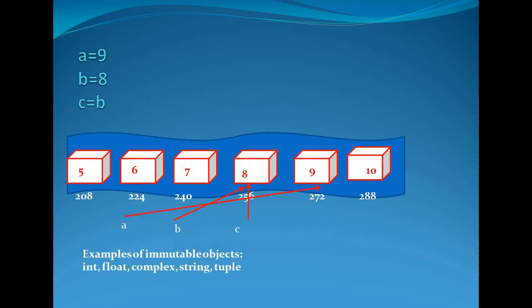When we change the values of a, b, and c, the addresses also change. a is now equal to 9, stored in memory location 272. b and c are storing value 8, and their address is 256. Integer, float, complex, string, and tuple are examples of immutable data types.